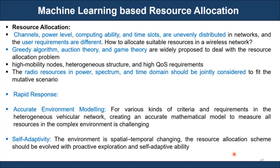Accurate network response and rapid response are very important because mobility is a key factor, so algorithms should respond very quickly. Self-adaptivity is very important, and accurate environment modeling is important to avoid unexpected dips in the signal-to-noise and interference ratio and to achieve higher performance.